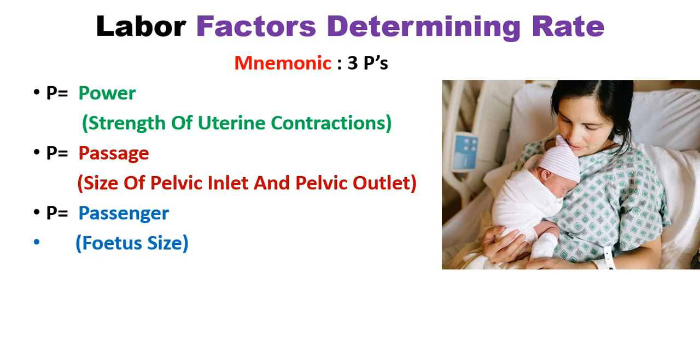So this is all about the three Ps for the factors determining the rate of labor. This is very easy for you to remember.